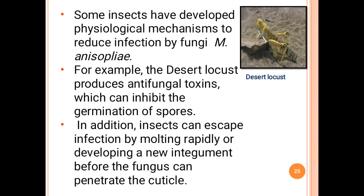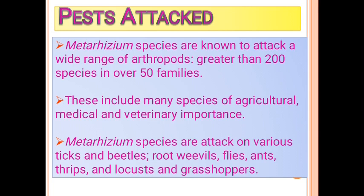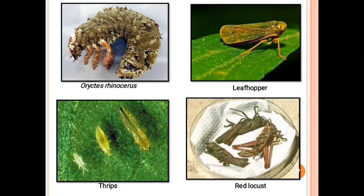Some insects have antifungal properties to suppress the growth of Metarhizium. For example, the desert locust has the ability to produce antifungal toxins that inhibit the growth and germination of Metarhizium spores. Metarhizium is known to control greater than 200 species in 50 families, including beetles, weevils, flies, ants, grasshoppers, and locusts. It shows green color growth, sporulation, and velvety green growth on insects.